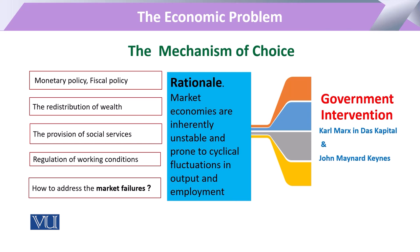To cover that inequality and imbalance, we require certain correcting measures and regulations. Those correcting measures and regulations will be provided by certain agencies, and these agencies and institutions that work to regulate the markets will be under government intervention.